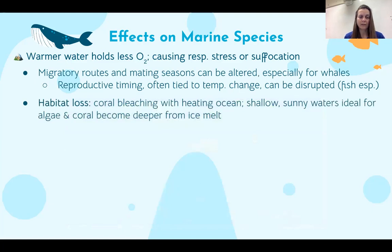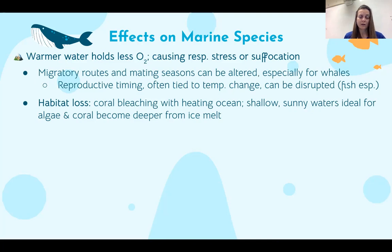As the ocean gets warmer, corals bleach — they lose their algae — and we'll talk about that in more detail shortly. Corals are a habitat for many other species, so this is a significant issue not just for the corals themselves but for all the organisms that depend on them. Corals grow in shallow, sunny waters because they depend on photosynthesis performed by algae living within them. As sea level rises, these areas become deeper, meaning less solar penetration, and the corals may no longer be able to live there.